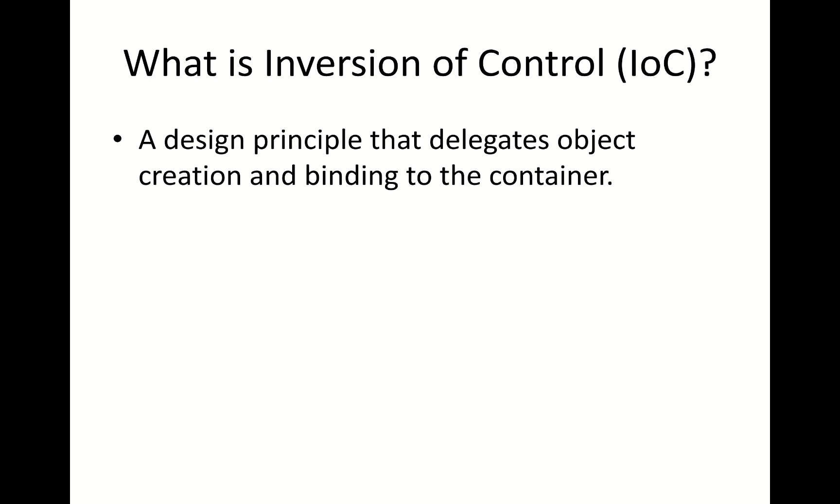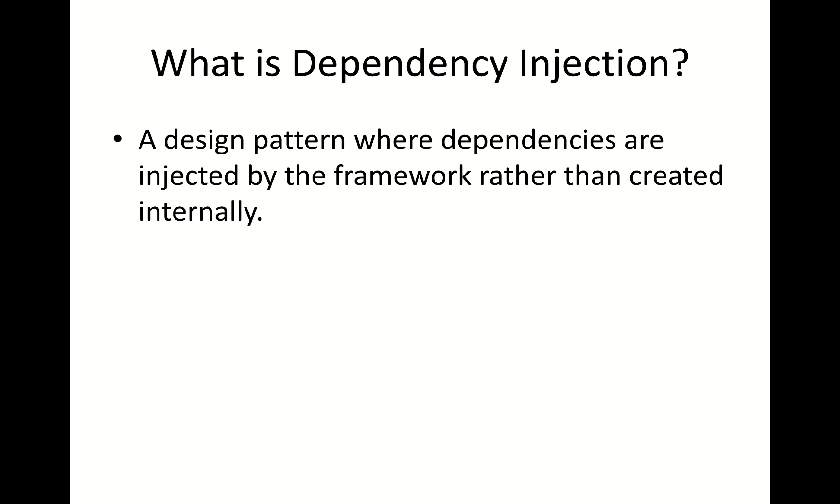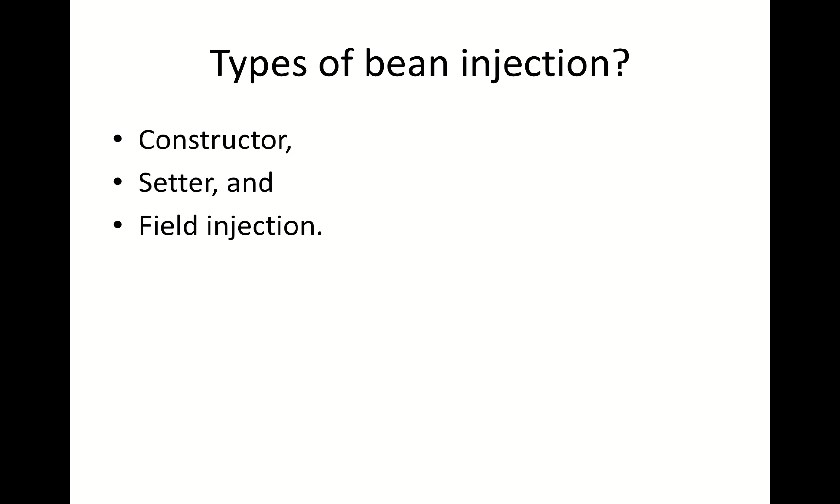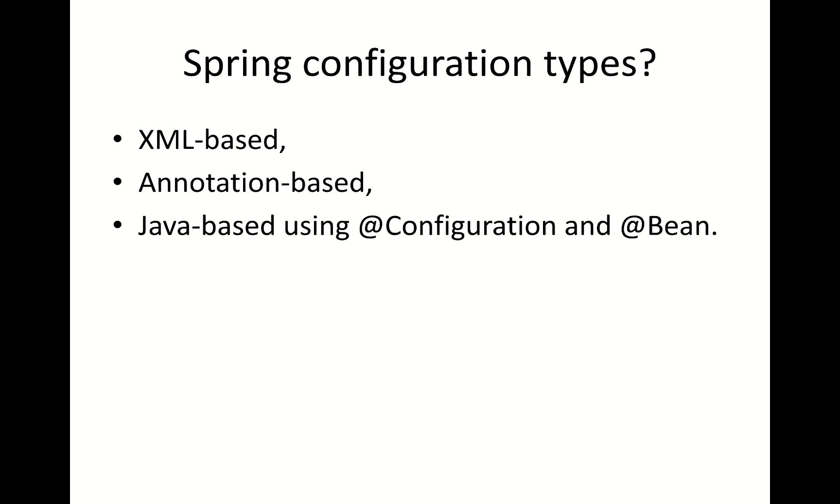What is Inversion of Control (IOC)? It is a design principle that delegates object creation and binding to the container. What is Dependency Injection? It is a design pattern where dependencies are injected by the framework rather than created internally. The types of bean injection are: constructor, setter, and field injection.